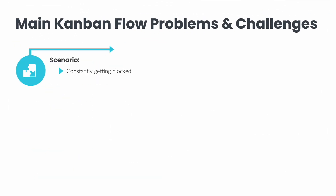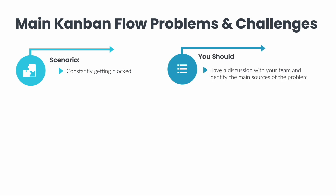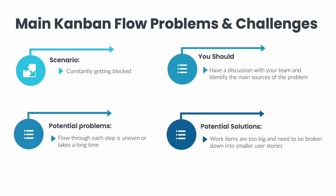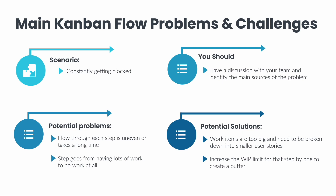Another common challenge could be constantly getting blocked. If your team or work items seem to find themselves blocked a lot, you should have a discussion with your team and identify the main sources of the problem. For example, if your flow through each step is uneven or takes a long time, it could be that your work items are too big and need to be broken down into smaller user stories. This should be done during a refinement session with your team and before the cards get into your ready column. If a step goes from having lots of work to no work at all, try to increase the WIP limit for that step by one, so that you create a buffer to handle the variation.